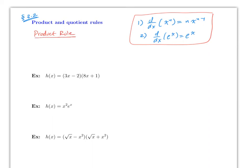The first rule is called the product rule. I highly highly recommend you just memorize this — it's straightforward but you need to memorize it. If h(x) is the product of two functions f(x) and g(x), then h prime is going to be f prime times g plus g prime times f. The best way to think about it: the derivative of the product equals the derivative of the first one times the second one, plus the derivative of the second one times the first one.